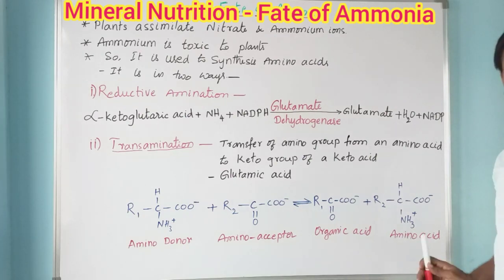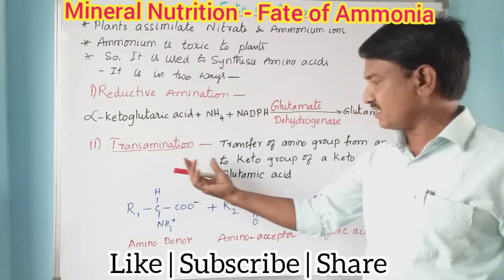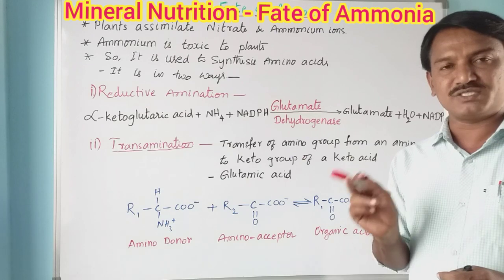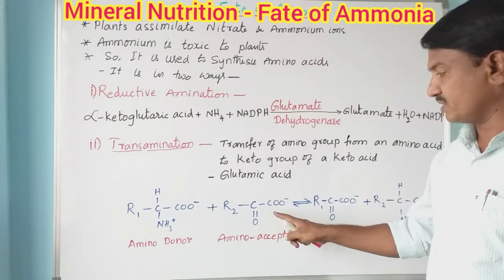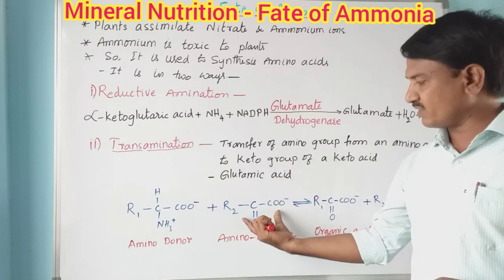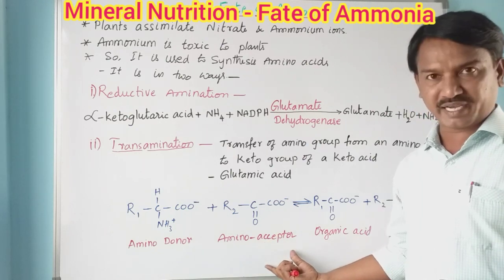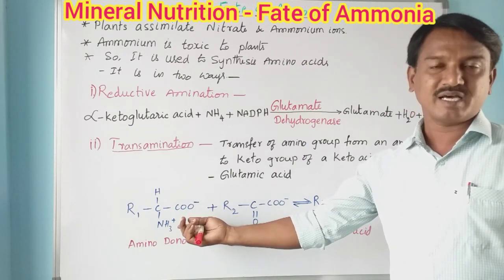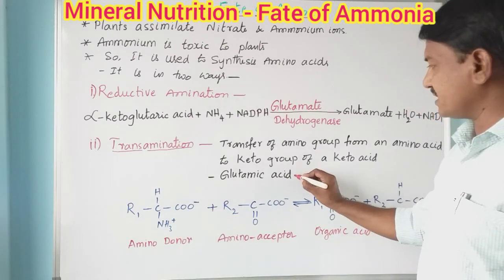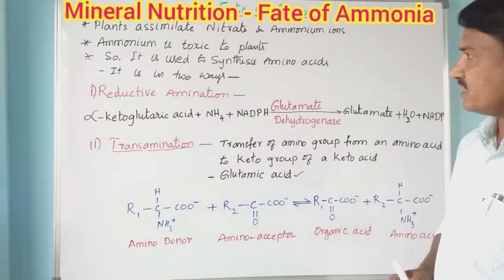When transfer of amino group occurs from the amino acid to the keto group, it forms one organic acid and also one new amino acid. In transamination, another amino acid is formed. The keto acid is the amino group acceptor, and the amino acid is the amino group donor — mostly the donor is glutamic acid.